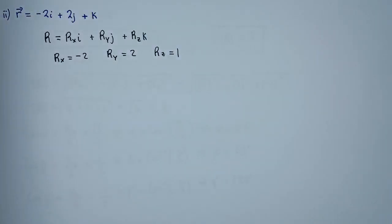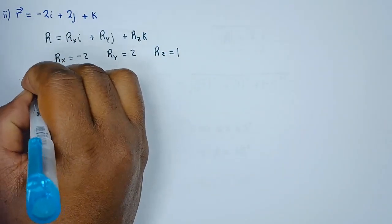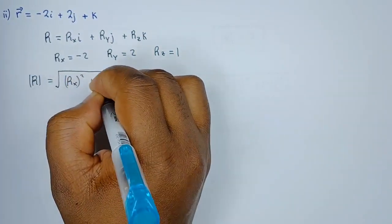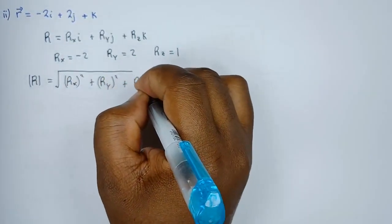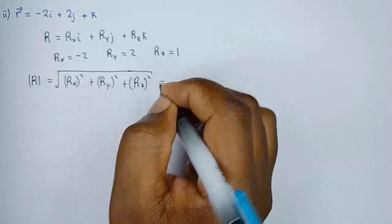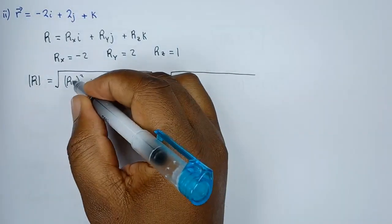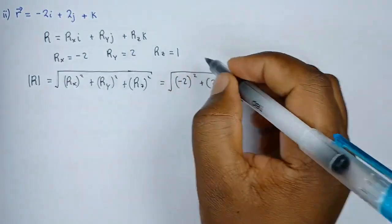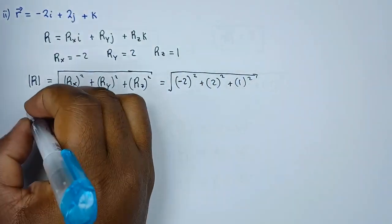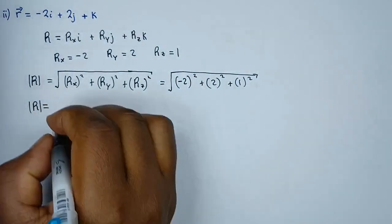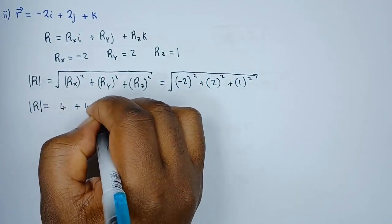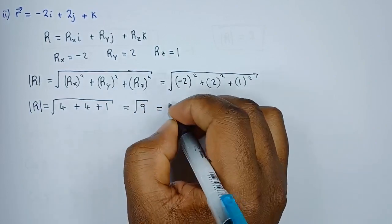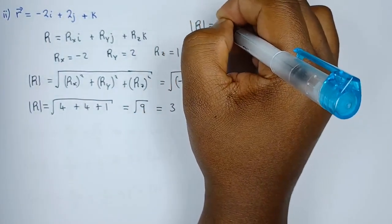From there we're going to find the magnitude of r. The magnitude of r will be given by the square root of r_x² + r_y² + r_z². So r_x is (−2)², r_y is 2², r_z is 1², giving us 4 + 4 + 1. This equals the square root of 9, leaving us with 3. So the magnitude of r is positive 3.